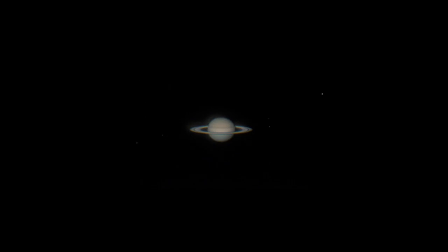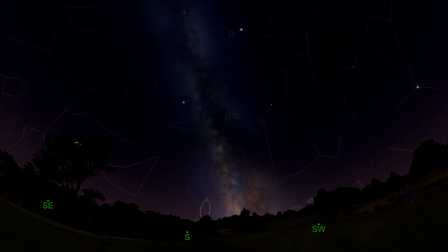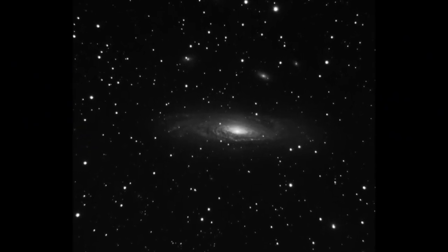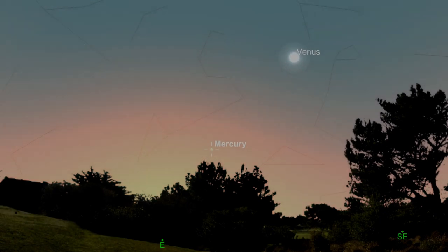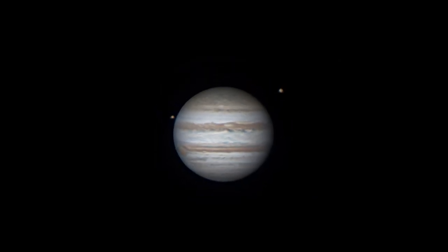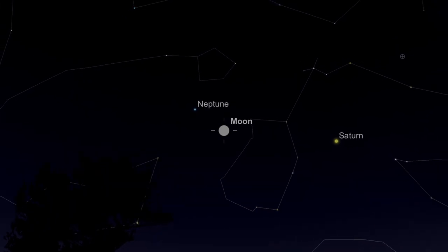So there we have it, we've got Saturn just after opposition in September. We've got the last of the summer Milky Way. We've got the autumn galaxies starting to appear. We've got Venus and Mercury in the morning sky. We've also got Jupiter early in the morning sky and we have a full super moon at the end of the month.